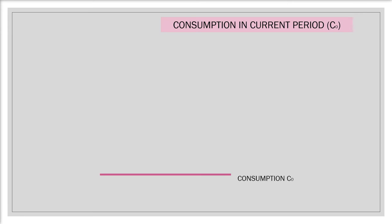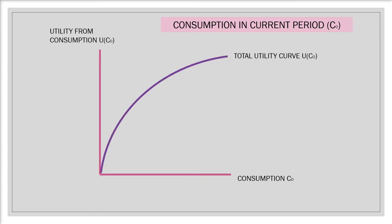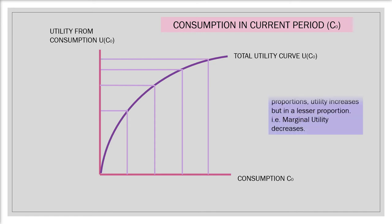We'll be looking at six diagrams to understand consumption and investment decisions. First, we look at utility from current consumption. On the x-axis we have consumption now, C0, and on the y-axis we have utility from consumption now, U(C0). The total utility curve U(C0) shows that as consumption increases in equal proportions, utility increases but in lesser proportions — that is, the marginal utility decreases. This is the utility from consumption in the current period, keeping future consumption constant.